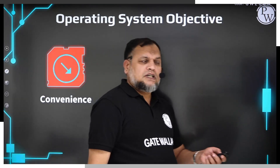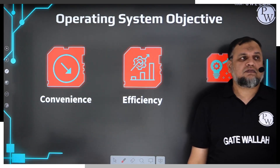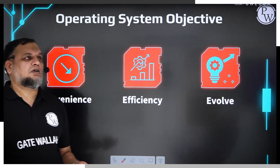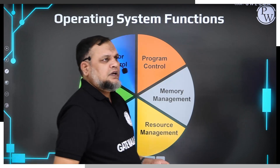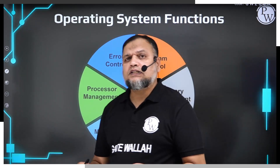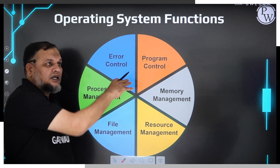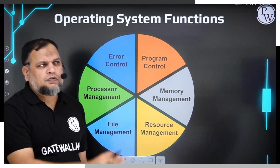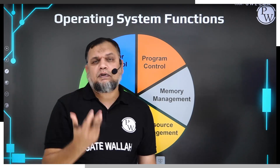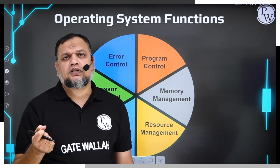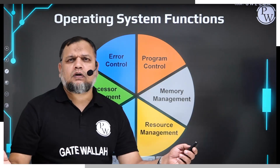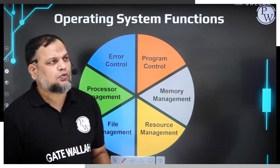Generally, the objectives of an operating system are to provide a convenient environment, to utilize resources effectively and efficiently, and to have goals of scalability or evolvability. Its functionality includes process management, process control, program control, memory management, resource management, file management, processor management, and error control. We are going to study all this functionality in detail — not with respect to any particular OS, but in a general way. At the end of the course you will have knowledge sufficient to develop at least a minimum basic functional operating system.